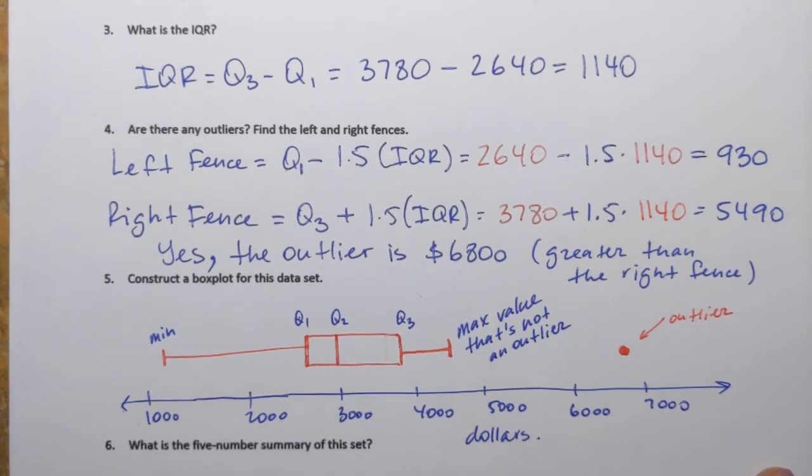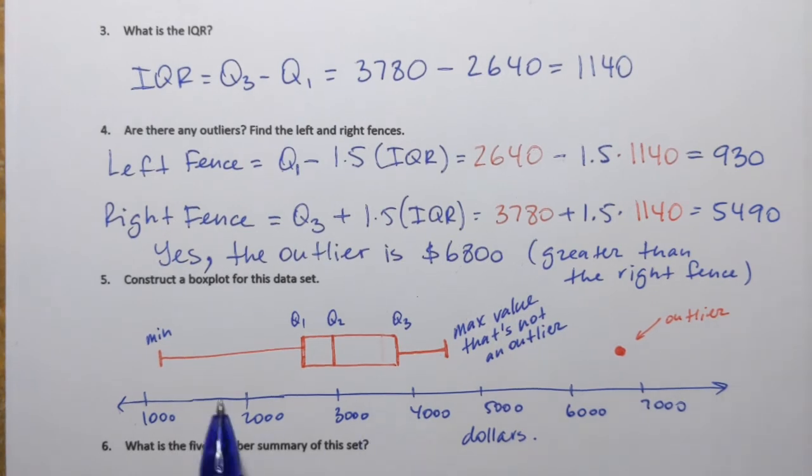And basically the box plot itself is completed now. The box plot itself is only what I have in red, and of course the number line. So all those are just extra notes for myself.